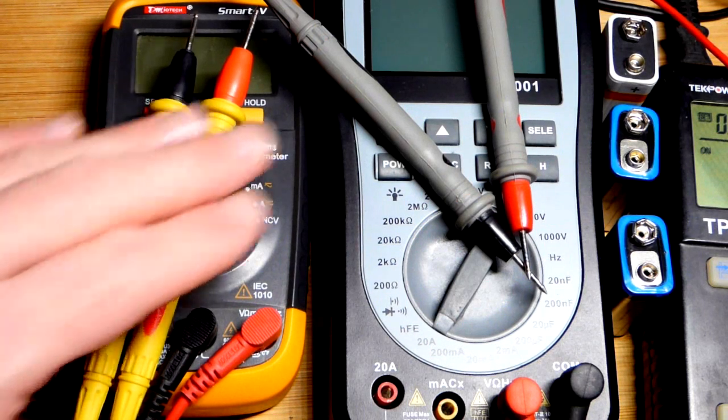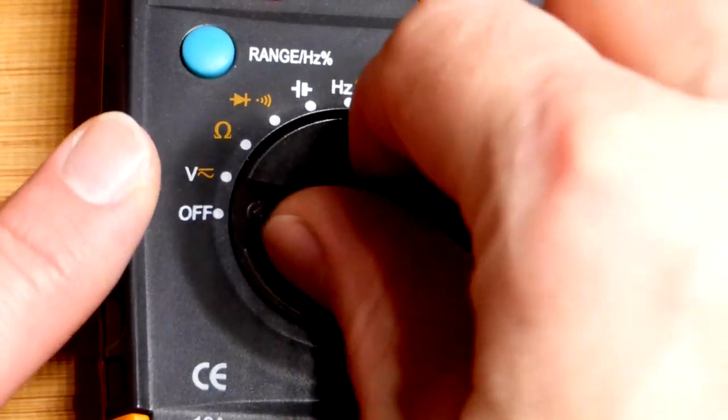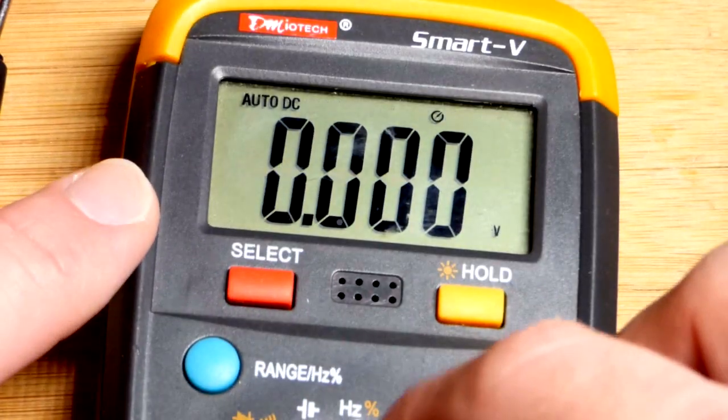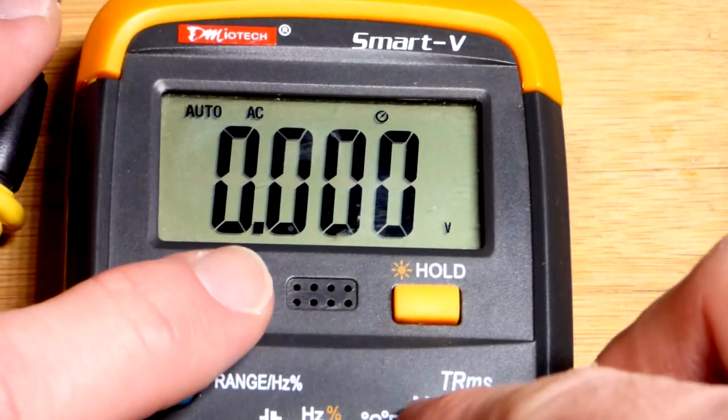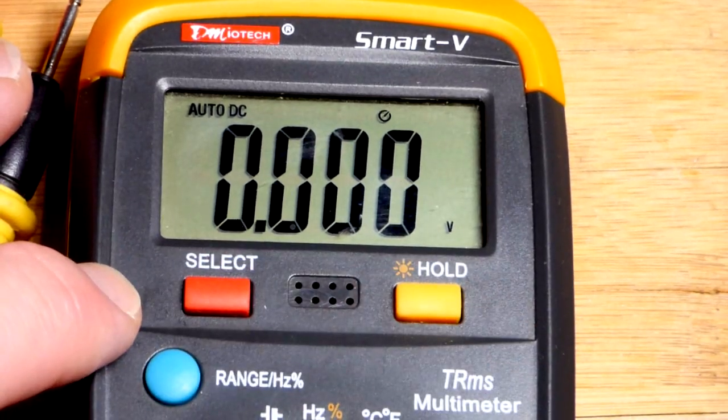Today we're doing a short video on measuring voltages with a multimeter. Auto-ranging meters usually just have one voltage setting, but you can switch it between DC and AC, and setting it to voltage also turns this one on.